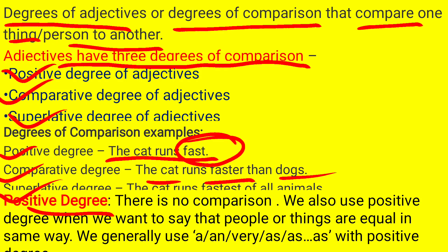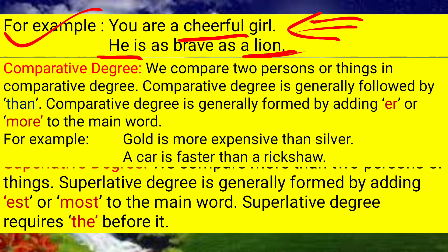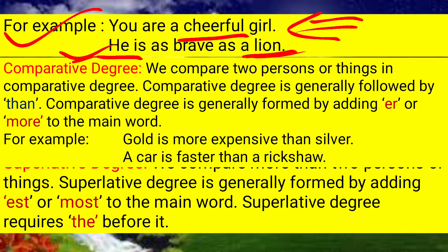With positive degree, we generally use 'as...as' and 'very.' For example: 'You are a cheerful girl' — she is cheerful, so this is a positive degree. Another example: 'He is as brave as a lion' — both he and the lion are equal in bravery, so this is also a positive degree.